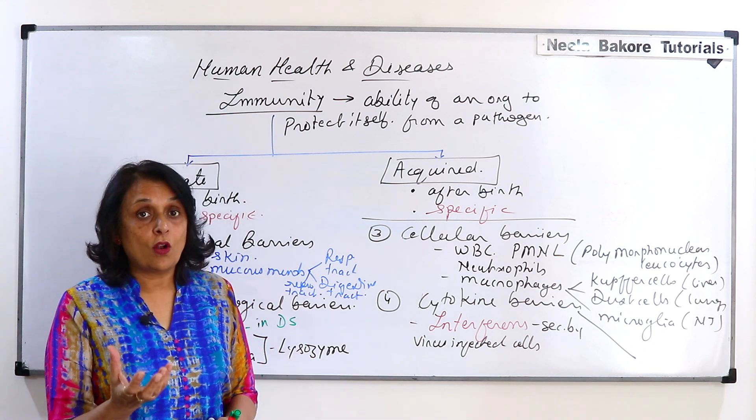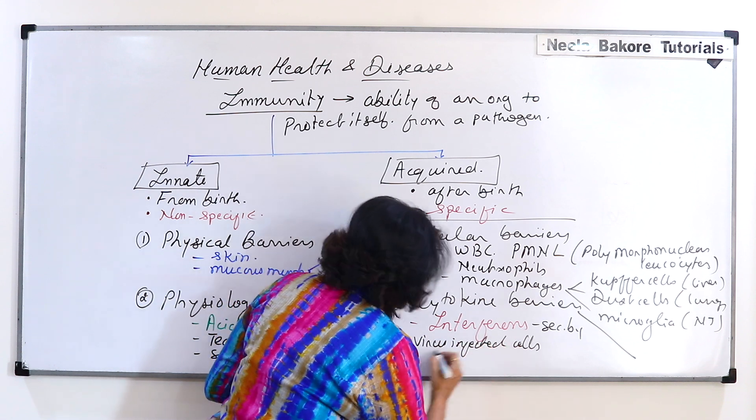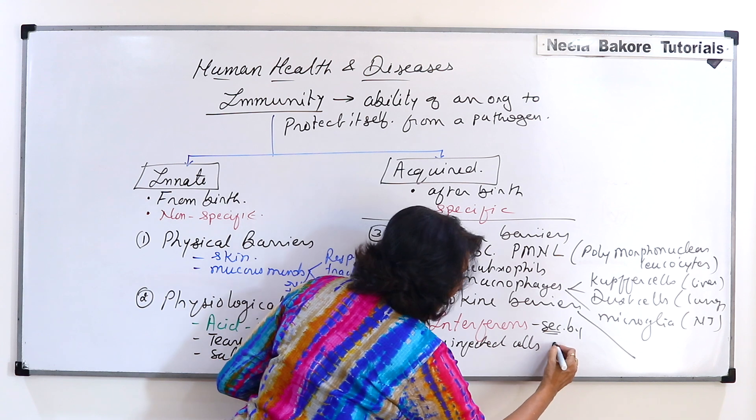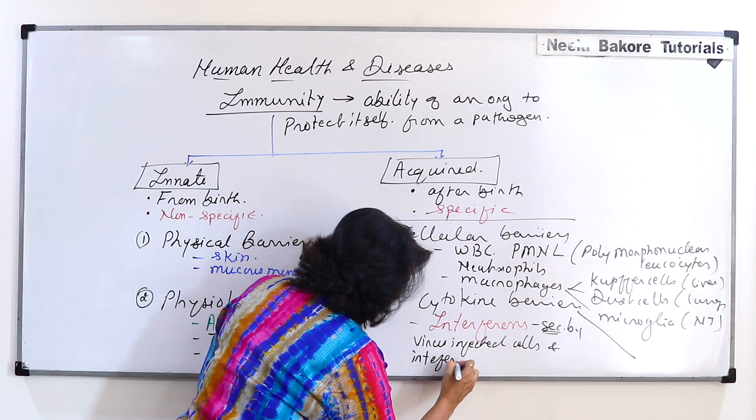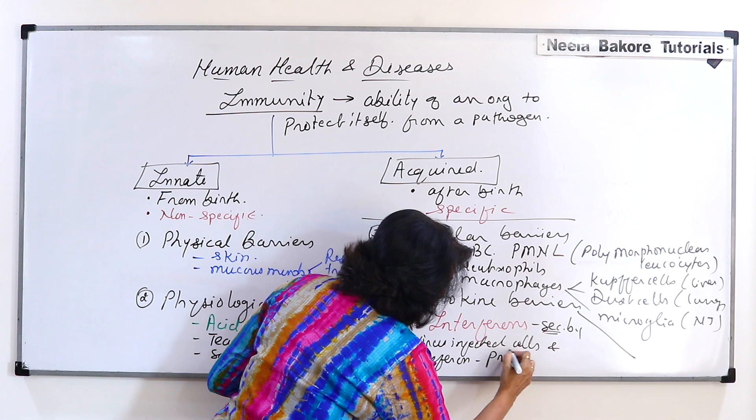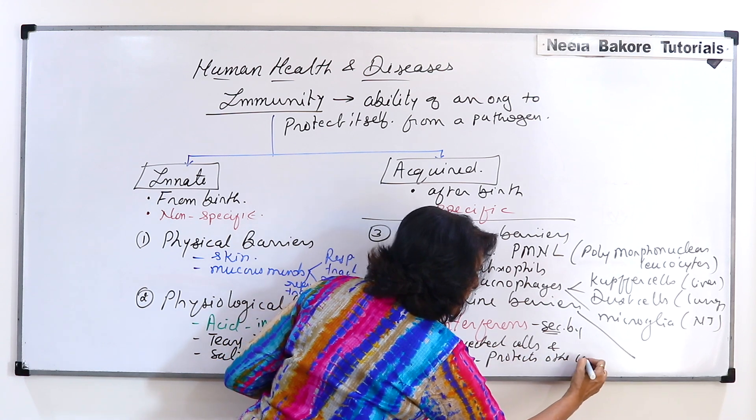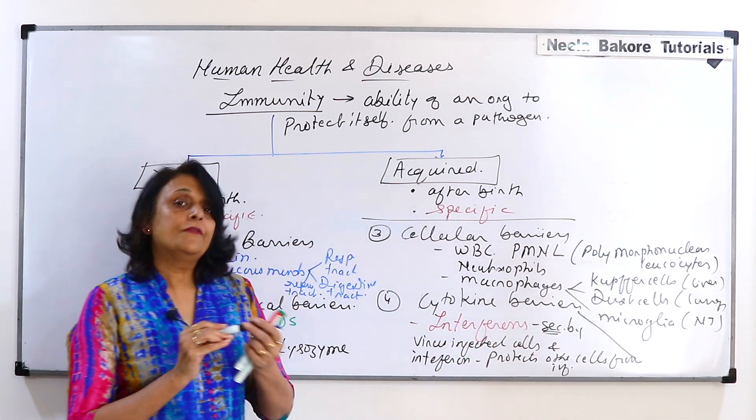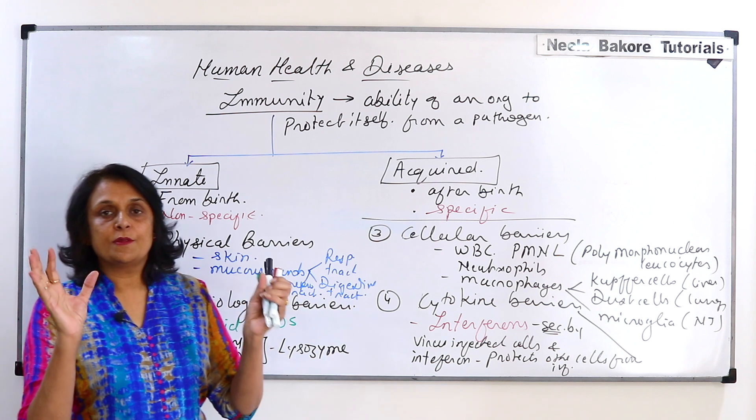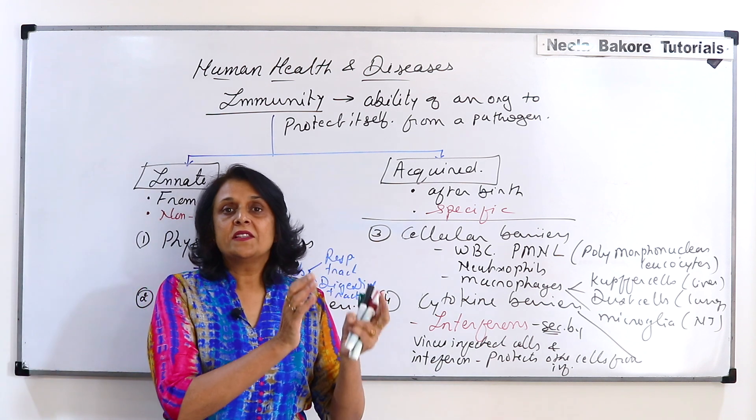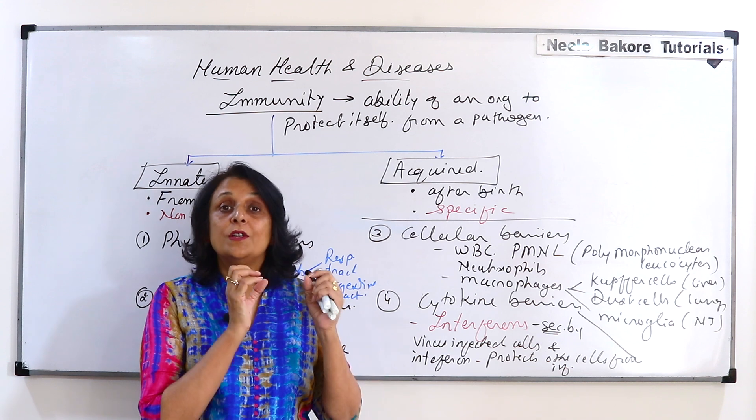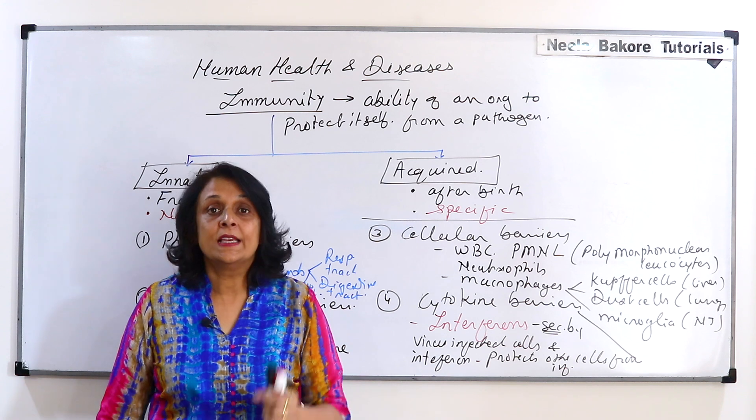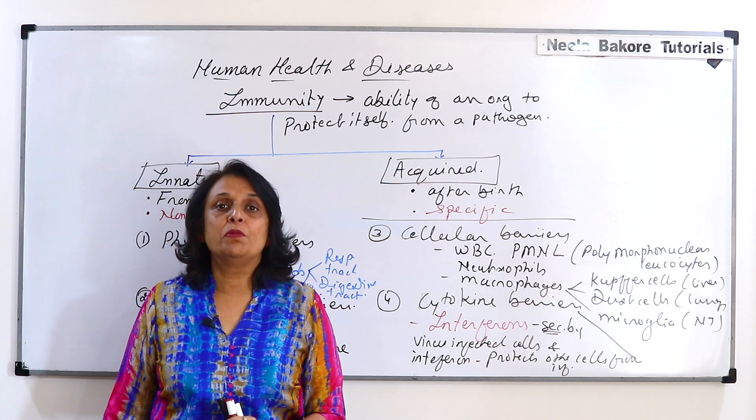And what are these interferons going to do? Virus infected cells secrete this interferon and interferon protects other cells from infection. So if there is a situation that some cells in our body get infected by a virus, those infected cells will secrete interferons and those interferons will make the other cells less susceptible to infection.